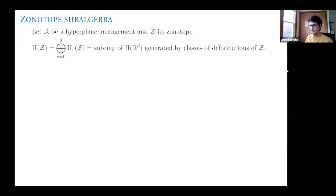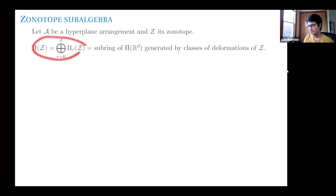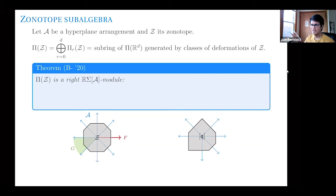This is a huge ring with too many generators, so we're going to restrict to something smaller. We fix a hyperplane arrangement and a zonotope of the arrangement — a polytope that is the Minkowski sum of segments, one orthogonal to each of the hyperplanes of the arrangement. We consider the subring generated by the classes of the deformations of the zonotope. In this subring we just have formal combinations of classes of deformations of the zonotope. The main result is that this space, which is a ring itself, also has the structure of a module over the monoid algebra of phases of the arrangement.